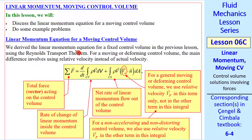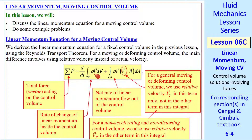We previously talked about the linear momentum equation for a fixed control volume using the Reynolds Transport Theorem. For a moving or deforming control volume, the main difference involves use of a relative velocity instead of the actual velocity in this term. We use it in this term only, not in the other integral term, nor do we use relative velocity here.